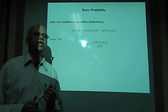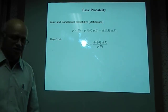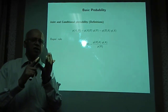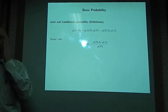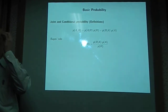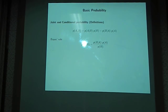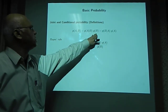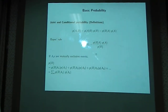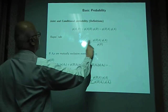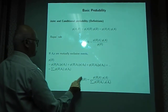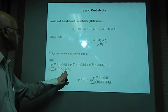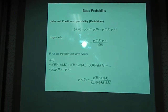Yesterday we learned the basics of probability necessary for understanding training a hidden Markov model and using a trained hidden Markov model for recognition. This is the definition of joint probability as a product of conditional probability and the a priori probability. That gives rise to Bayes' rule. The a priori probability P of B can be written as a summation of the product of conditional probabilities and a priori probabilities. We will use this in our derivation.